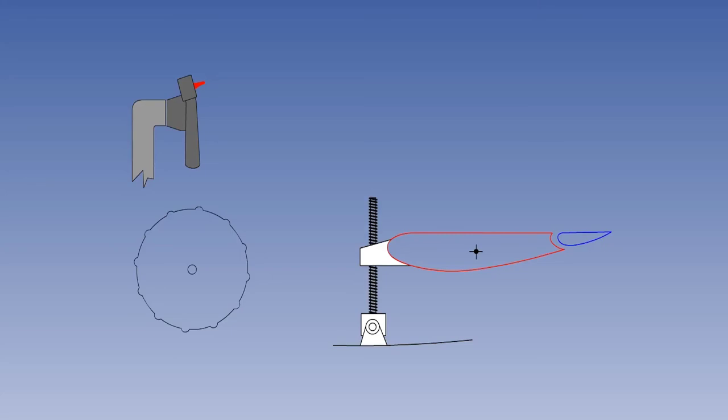The second advantage of the variable incidence trimming tailplane is that there is less aerodynamic drag when the aircraft is in trim, a big advantage in the cruise.